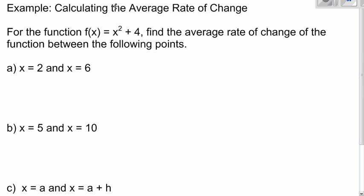So let's look at an example where we calculate the average rate of change. We're given the function f of x equals x squared plus 4. Find the average rate of change of the function between the following points. From 2 to 6. So the first thing we need to do is plug in both 2 and 6. So plug in 2, 2 squared plus 4, that is 4 plus 4, which is 8.